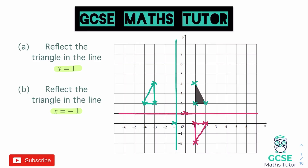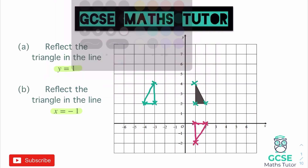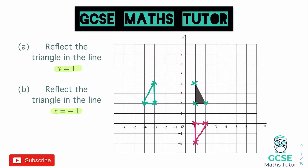You might not always be asked to reflect in a line y equals or x equals. You might be asked to reflect in one of the axes, in which case the line is normally drawn a little bit thicker for you. But if it's not, if it says to reflect in the x-axis, you could draw the line in just to make sure you're happy with that. That is how we're going to do a reflection, and here are a couple for you to have a go at.